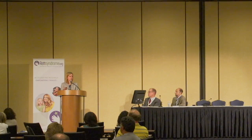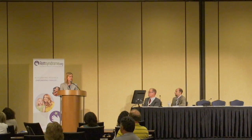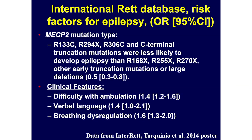Additional data from the InterRET database showed that some specific mutations in the MECP2 gene seem to be correlated with worse or less severe epilepsy. Clinical factors associated with higher likelihood of having epilepsy include difficulty with ambulation, difficulty with verbal language — so nonverbal children — or breathing dysregulation.